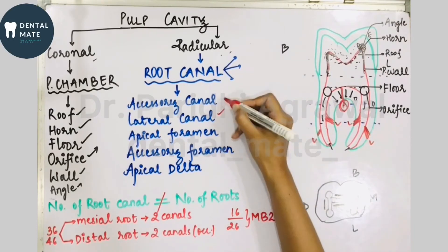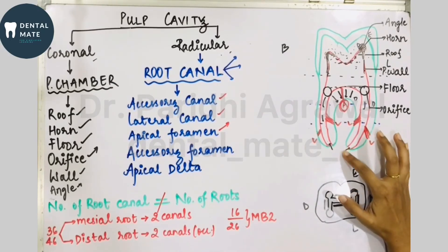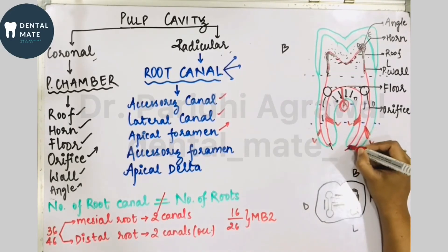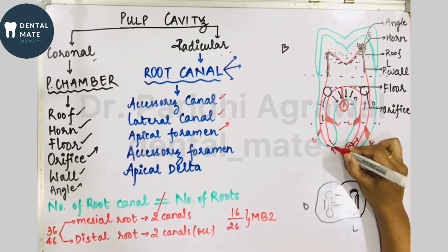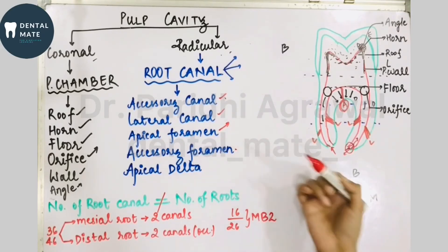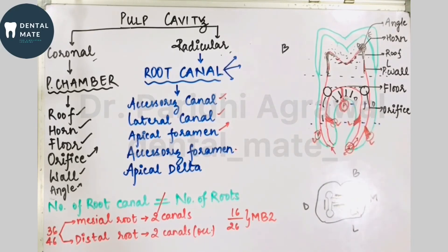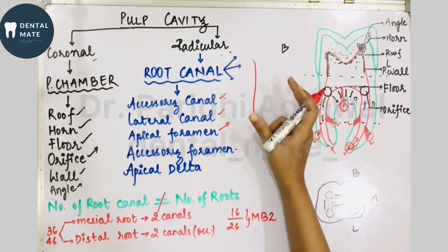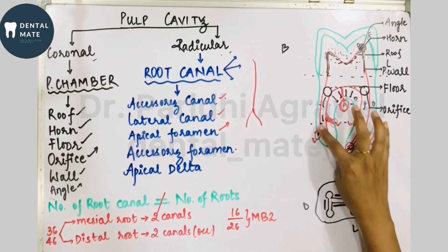The apical foramen is an aperture located at or near the apex of the root. Accessory foramina are the openings of the accessory canals. The apical delta refers to the area between lateral canal branchings near the apex — like a river delta, where one main canal divides into multiple parts near the apical region.